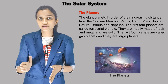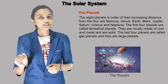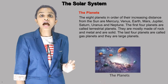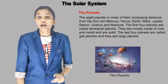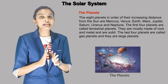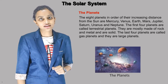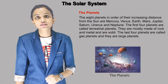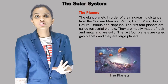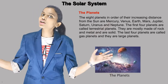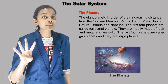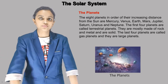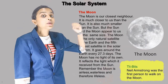The 8 planets in order of their increasing distance from the sun are: Mercury, Venus, Earth, Mars, Jupiter, Saturn, Uranus, and Neptune. The first four planets are called terrestrial planets — they are mostly made of rock and metal and are solid. The last four planets are called gas planets and they are large planets.